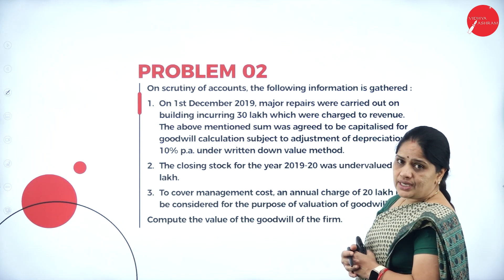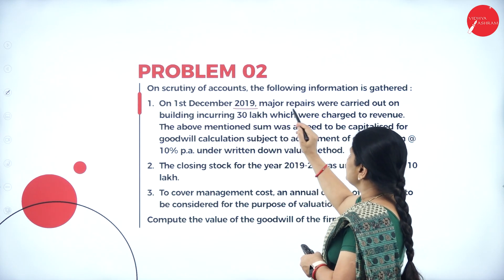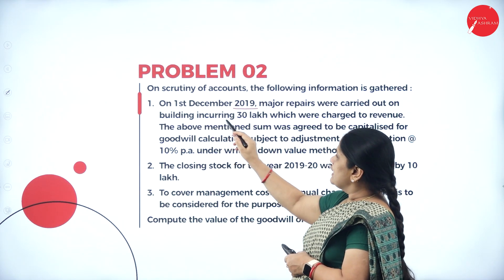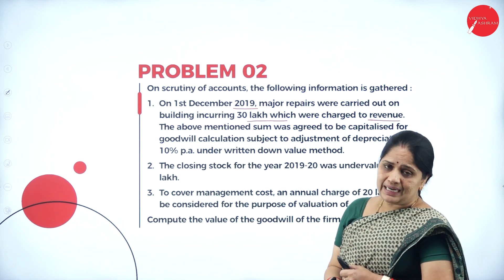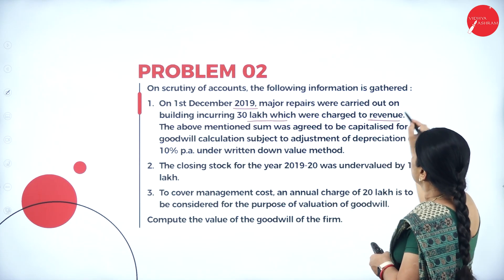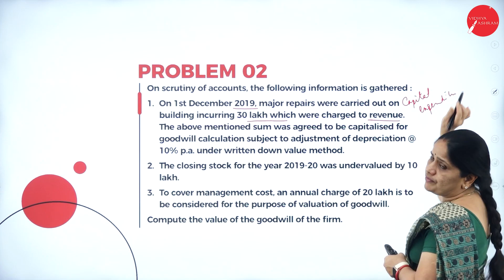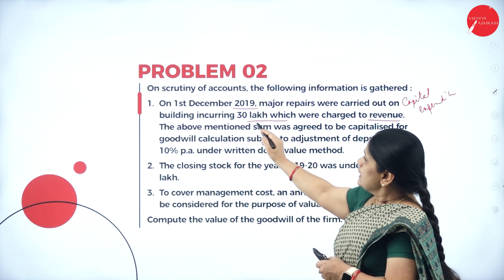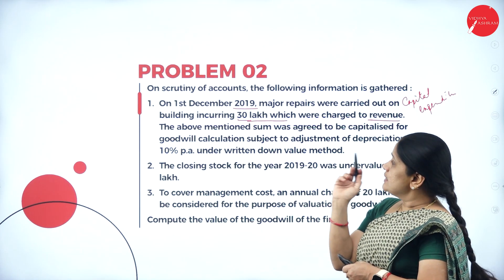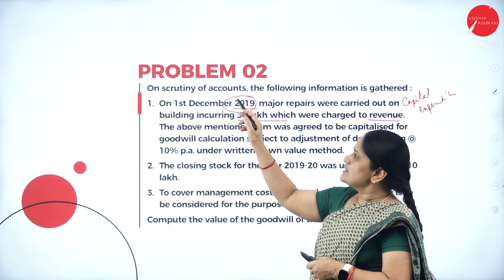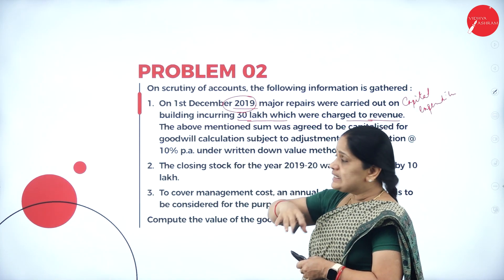There is additional information gathered on scrutiny of the accounts. On 1st December 2019, major repairs were carried out on the building incurring 30 lakhs, which were charged to revenue. Whenever there is any major repair to the building it should not be charged to revenue — it is capital expenditure, so it cannot be deducted from that year's profits. This 30 lakhs has been deducted from the profit of 2019-20.